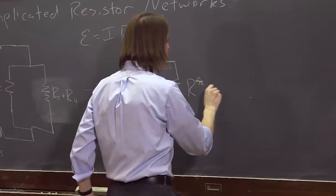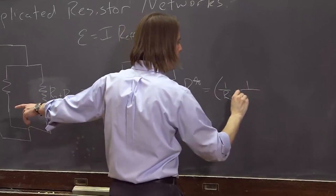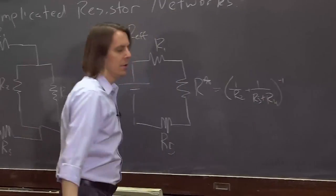So R star, its value would be one over R2 plus one over R3 plus R4 to the minus one.